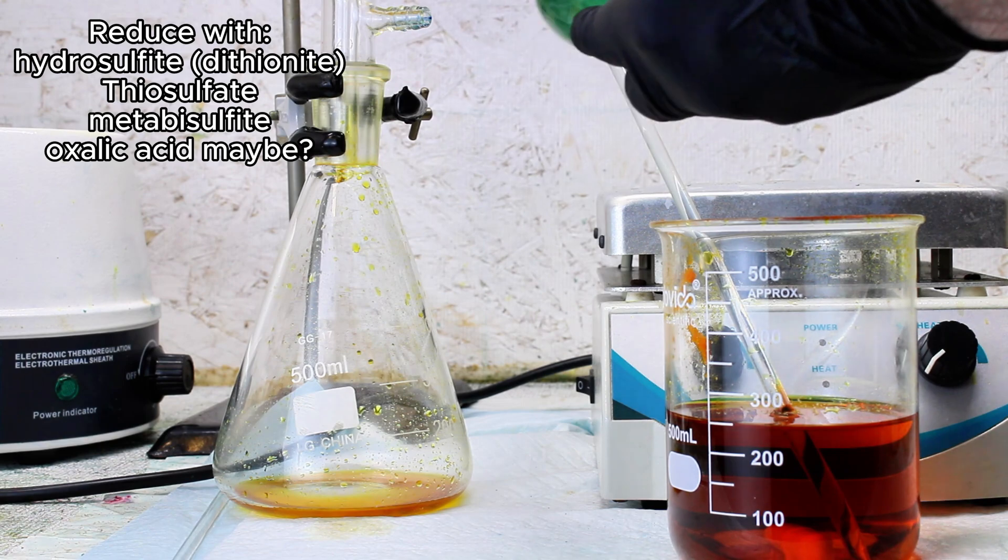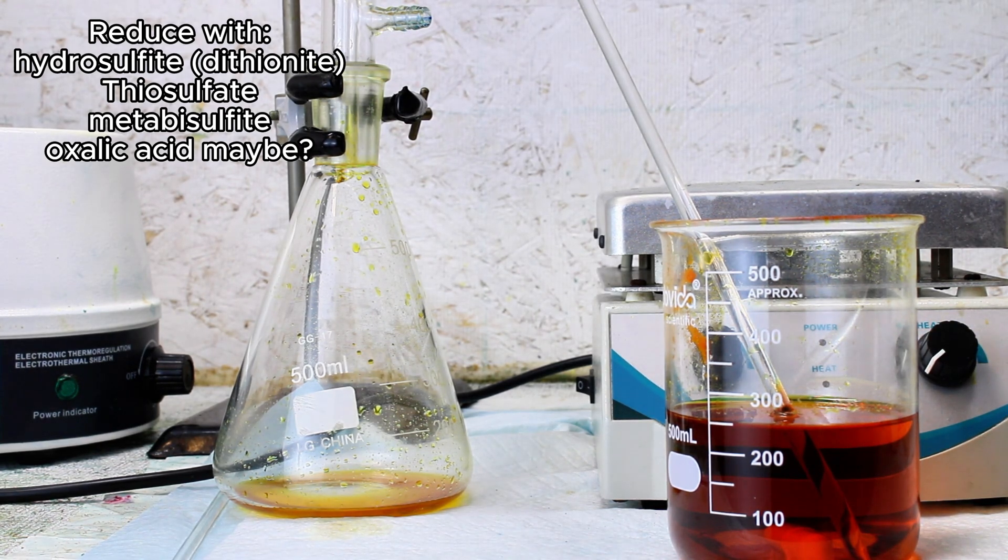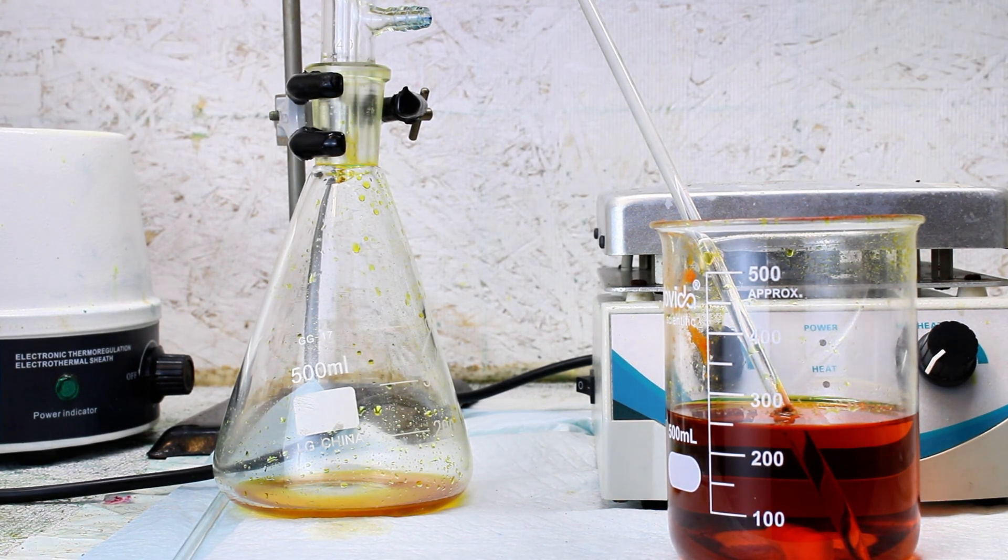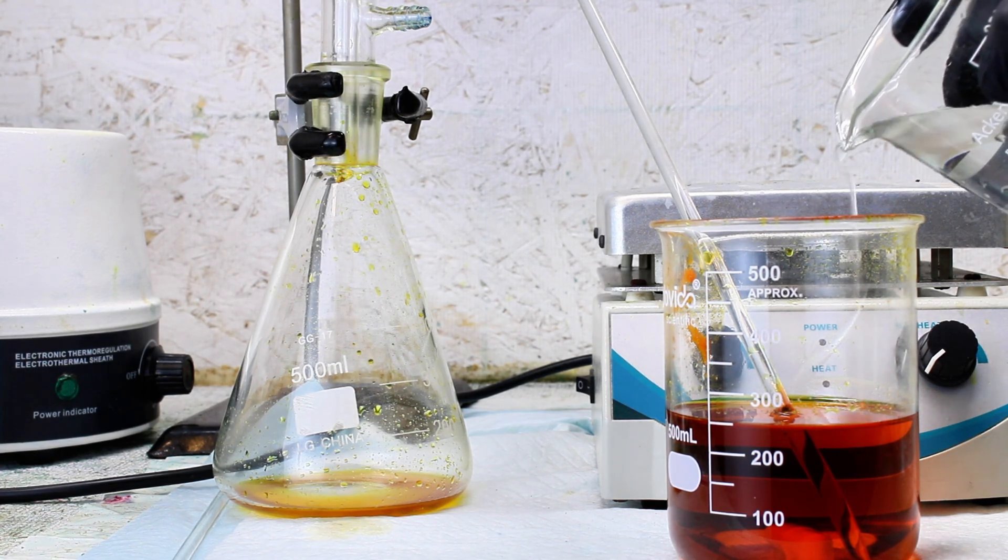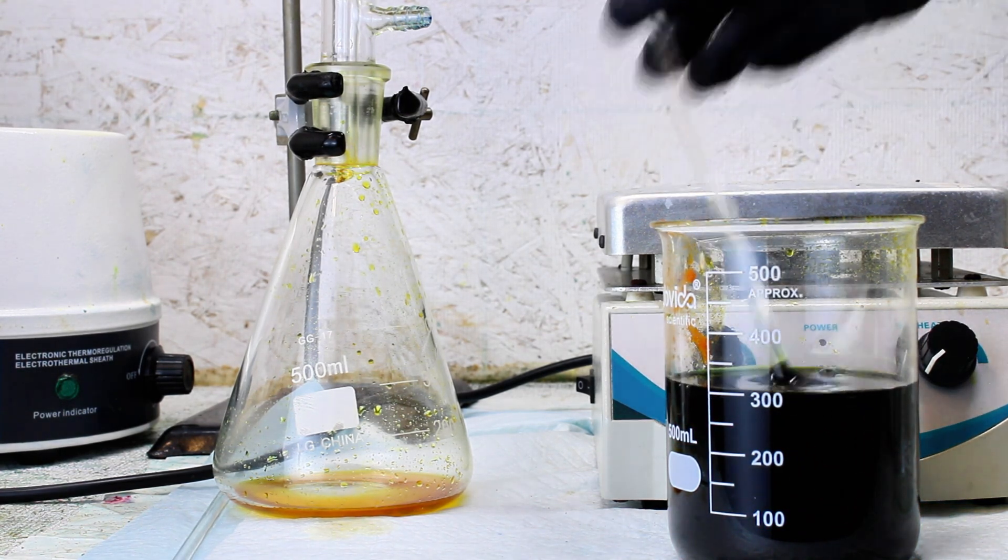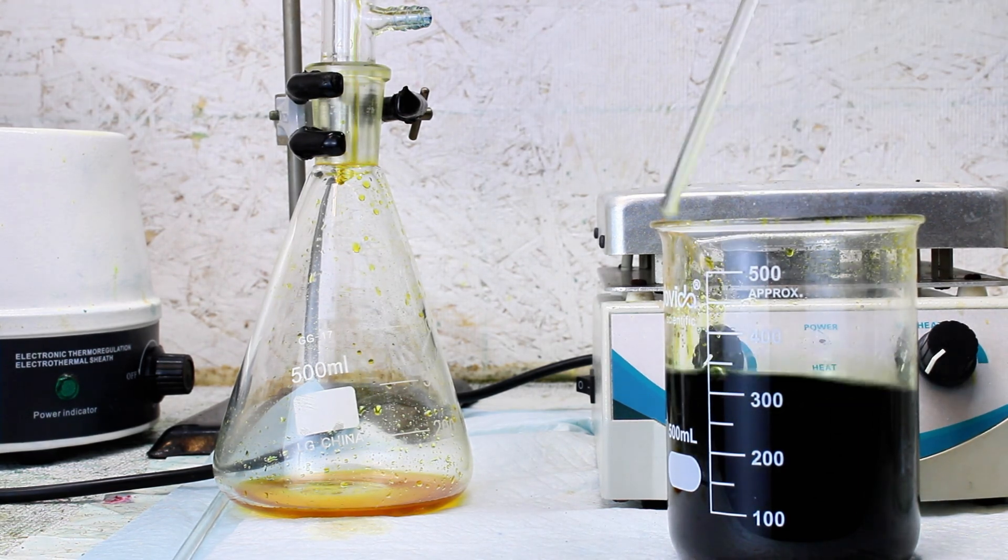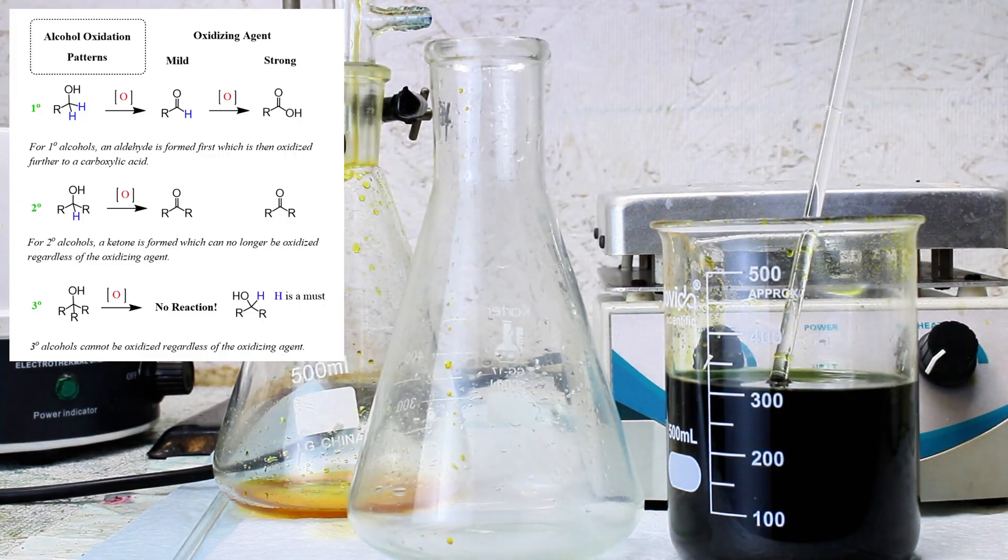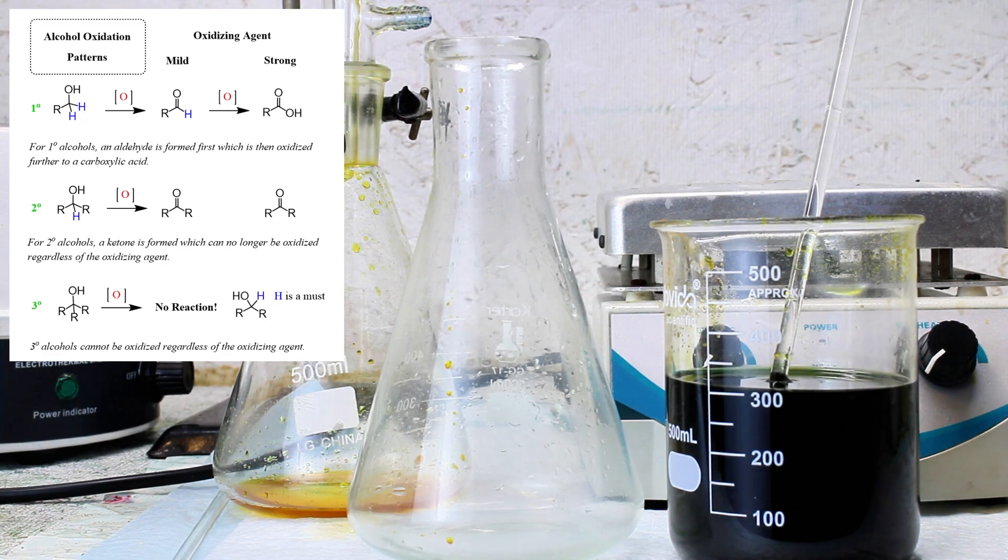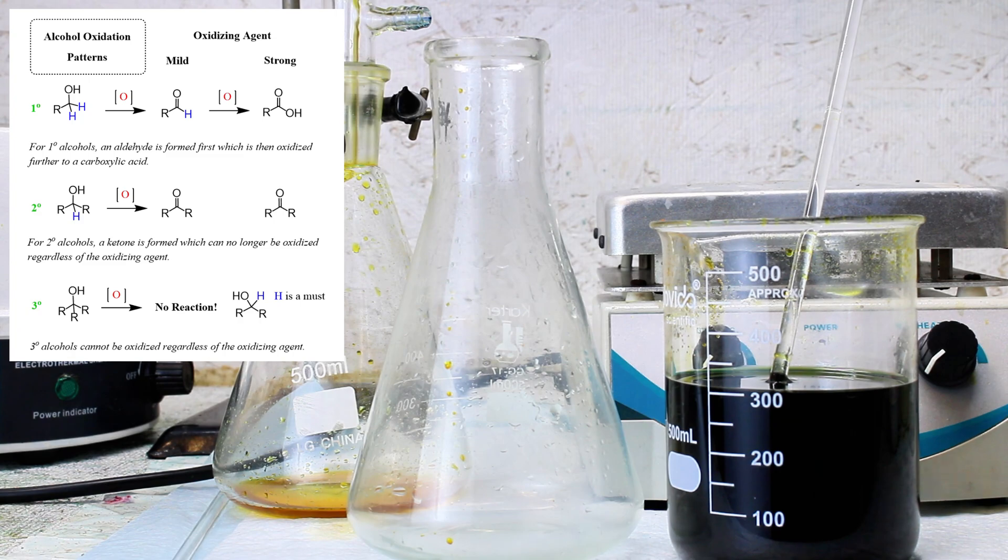Now a bit about this chemical itself. All hexavalent chromium compounds are decently strong oxidizers and frequently used in organic synthesis as a milder alternative to permanganate. For example, I've used dichromate to oxidize primary alcohols to aldehydes or secondary alcohols to ketones, while permanganate typically only produces carboxylic acids.